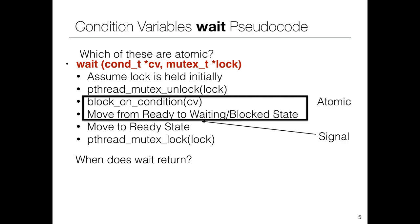A student asks: why in the pseudocode are the second and third points marked as atomic if locking hasn't happened yet? The answer is that it happens internally, so we don't necessarily have to show it explicitly here. Think of it as done at a lower hardware level. This is just pseudocode to help understand that there are two distinct operations.